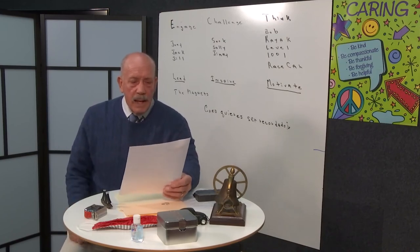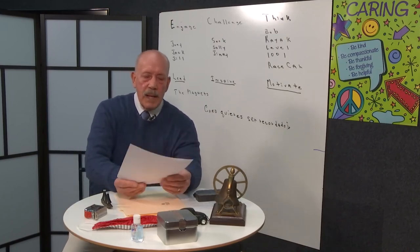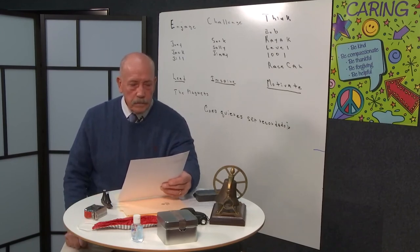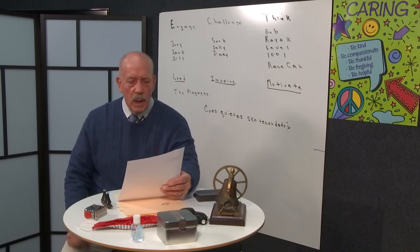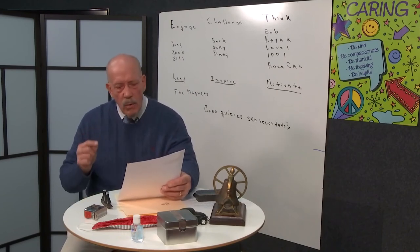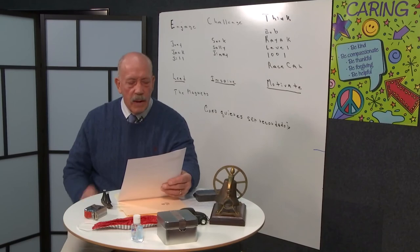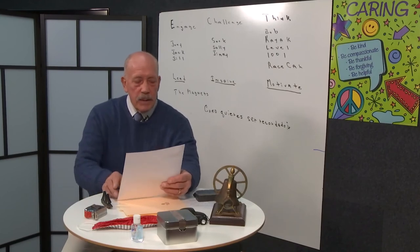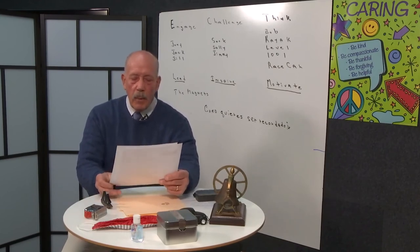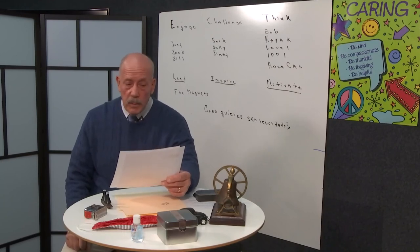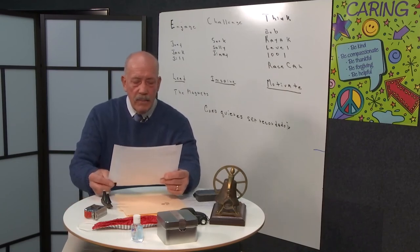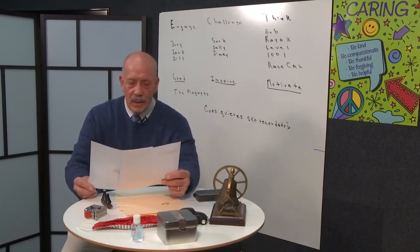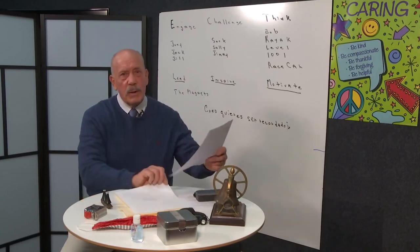On one particular day, as Mr. Miller was bagging some early potatoes for me, I noticed a small boy, delicate of bone and feature, ragged but clean, hungrily appraising a basket of freshly-picked green peas. I'm a pushover for cream peas and new potatoes. Pondering the peas, I couldn't help overhearing the conversation between Mr. Miller and the ragged boy next to me. Hello, Barry. How are you today? Oh, hello, Mr. Miller. Fine, thanks, but I'm just admiring them peas. They sure look good.